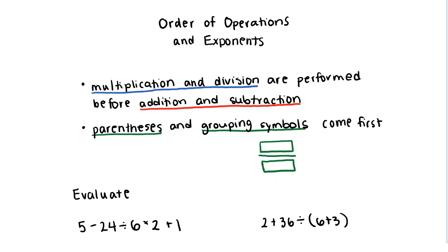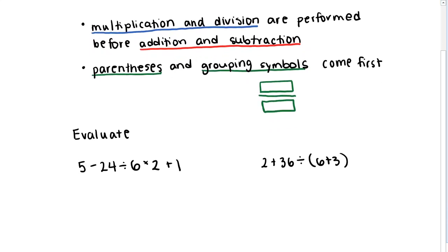So fractions tell us that we should look at the numerator first, the denominator separately, and then divide the two. That grouping should be considered before we perform any of the operations within the fraction. Let's apply these ideas to two quick examples as a quick reminder.